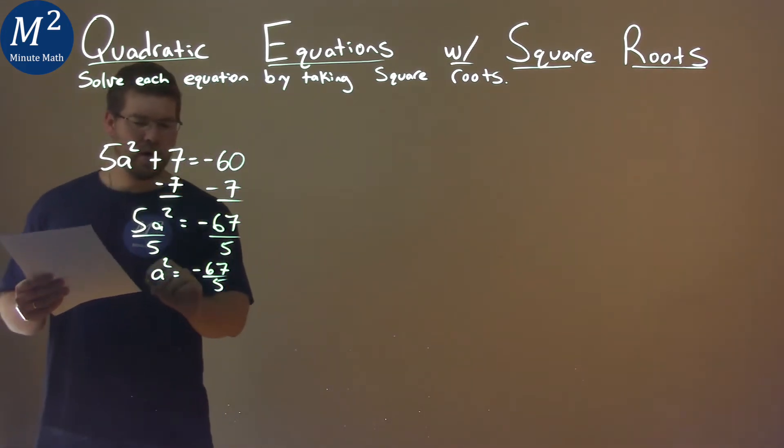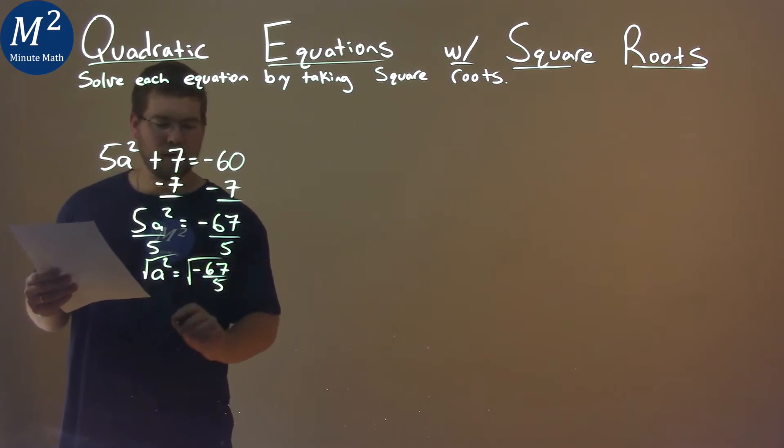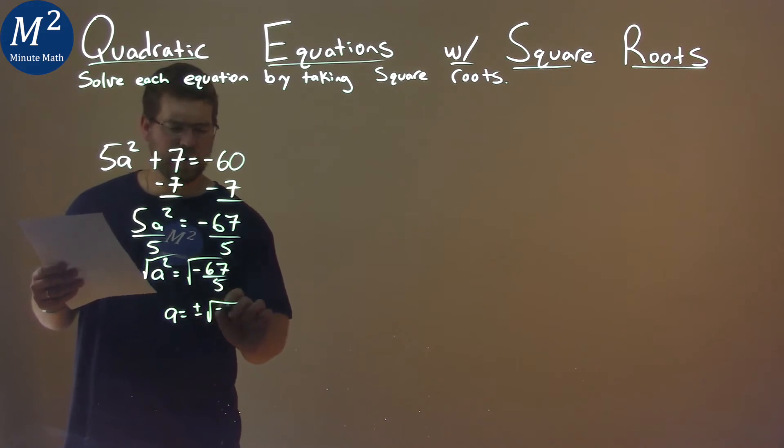Well, to get rid of the a squared, I take a square root of both sides. And so a equals plus or minus the square root of negative 67 over 5.